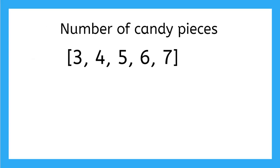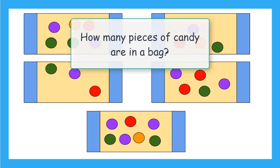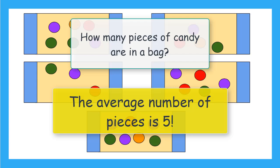If we look at our data from the candy bags, we find the range. We take our largest data value, seven, and we subtract our smallest data value, three. So we get seven minus three equals four. The range of our data is four. So let's answer our question. How many pieces of candy are in a bag? And we can say the average number of pieces per bag is five.